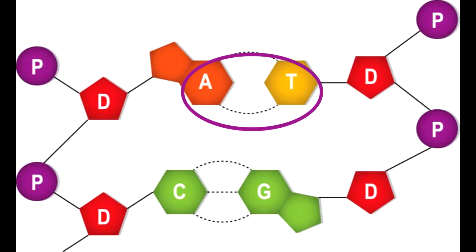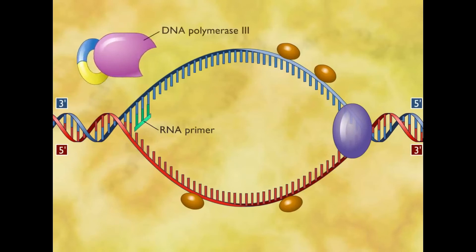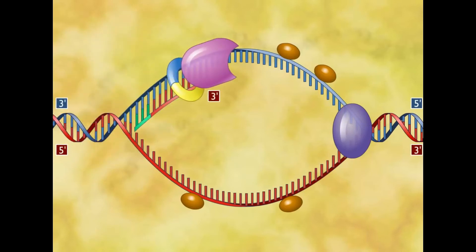Adenine paired with thymine, cytosine paired with guanine. The complementary nucleotides are added to each strand by DNA polymerase 3 to form new strands.